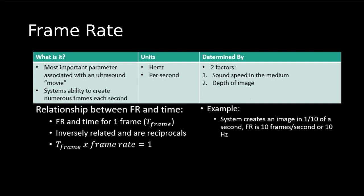We need to be aware of the relationship between frame rate and time. Frame rate and time for one frame is known as our T-frame — the amount of time it takes to produce one frame. These are inversely and reciprocally related. If we take the T-frame multiplied by the frame rate, it equals one. So for example, if our system creates one frame in one-tenth of a second, then our frame rate is 10 frames per second.